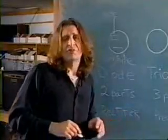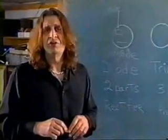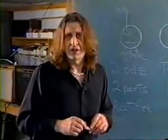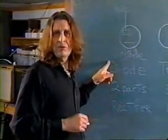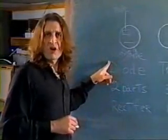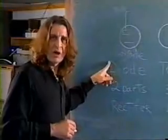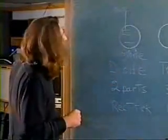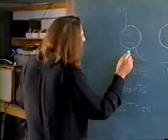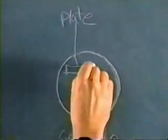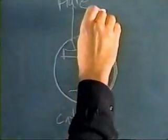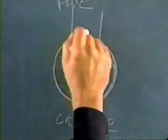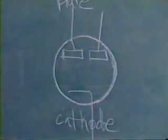Most amplifiers that use tube rectifiers will have a diode, or more commonly a twin diode. A twin diode would be the same setup but with two plates, so that you could have a full wave rectifier instead of a half wave rectifier.